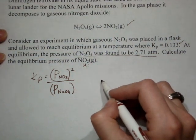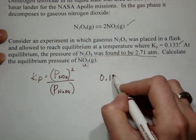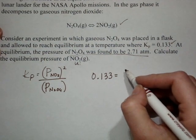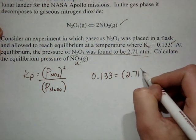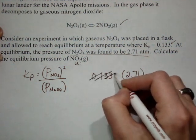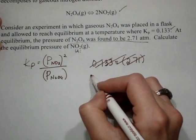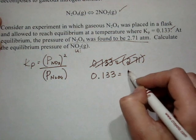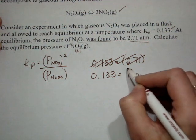Kp is 0.133 equals— oops, sorry, try again. Kp is 0.133. There we go. P of NO2 is what I'm looking for, and P of N2O4 is 2.71 atmospheres.